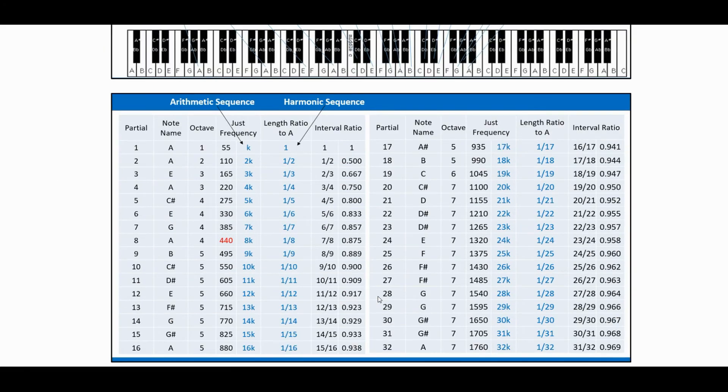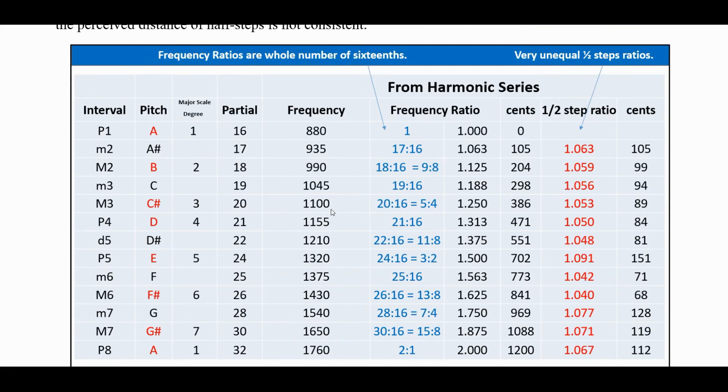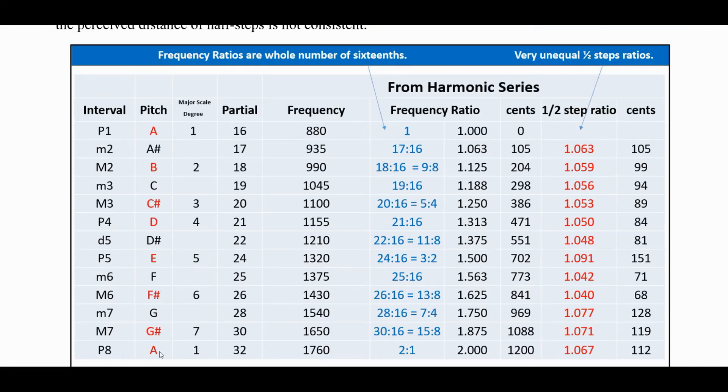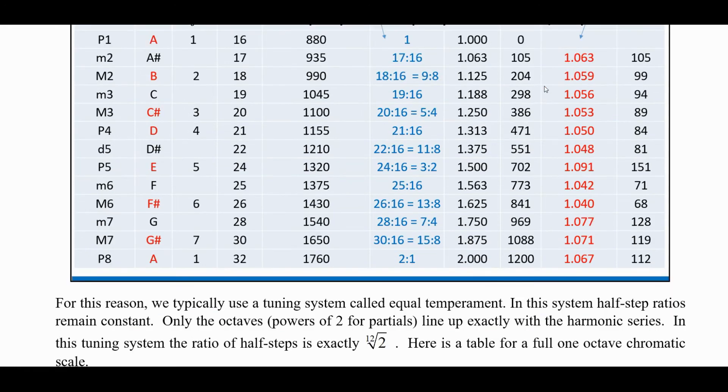This is a pure harmonic series tuning of these things, if you did exactly those positions on a string. Not necessarily on a piano, because a piano is not tuned that way. When you do frequency ratios here, the half-step ratios, if we go up to the 16th to the 32nd partial, we have basically the notes that we can pull for a chromatic scale here.